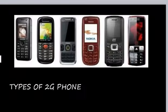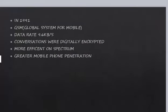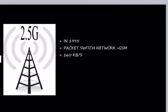Second generation (2G) mobile phone was launched in 1991. It is also called GSM, Global System for Mobile. The data rate of 2G is 9.6 KB per second. Conversations are digitally encrypted, more efficient on spectrum, and it achieved greater mobile phone penetration.